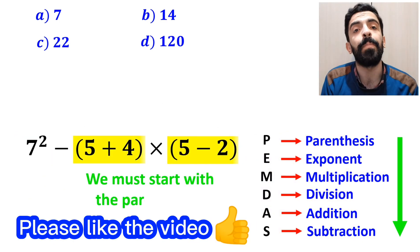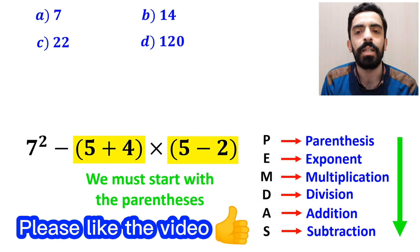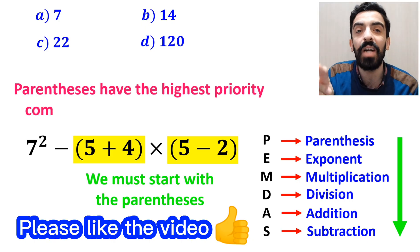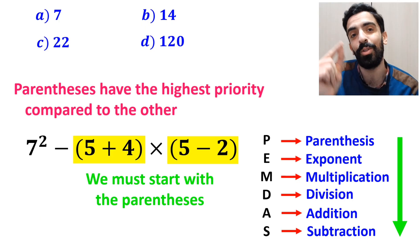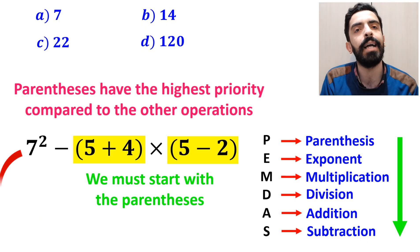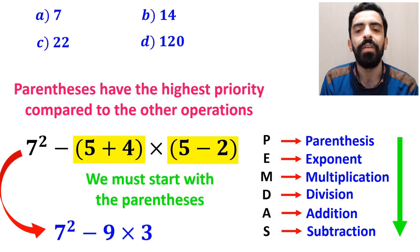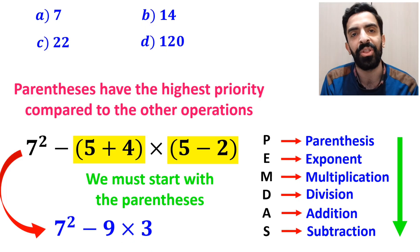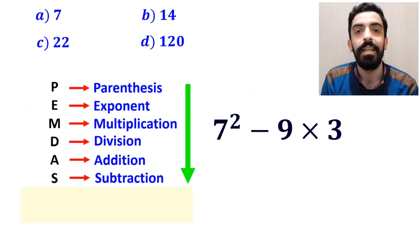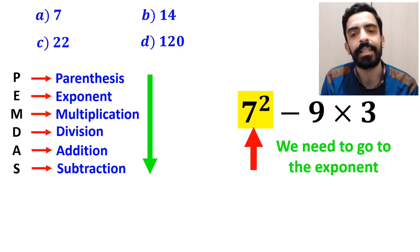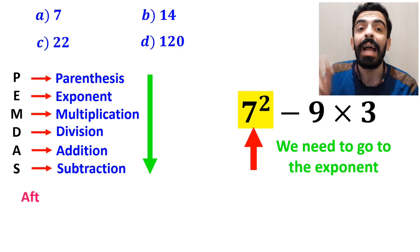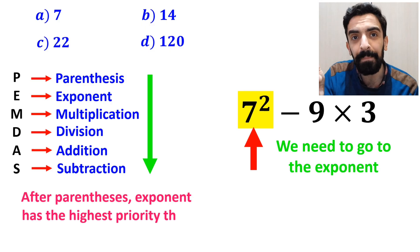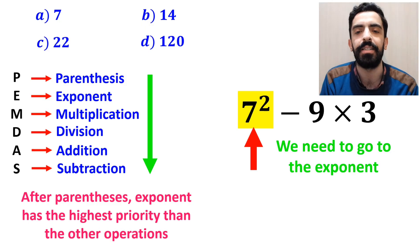So we must start with the parentheses first, because according to the PEMDAS rule, parentheses have the highest priority compared to the other operations. Instead of the original expression, we can write 7 squared minus 9 multiplied by 3. In the next step, we need to go to the exponent, because in the PEMDAS rule, after parentheses, the exponent has a higher priority than the other operations.